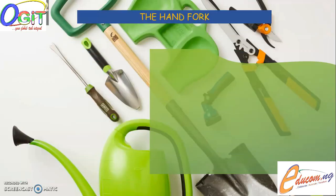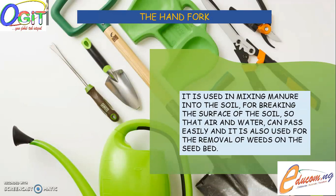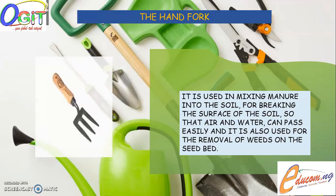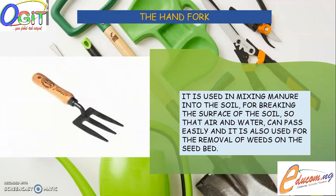The next type of farm tool is the hand fork. The hand fork is used for mixing manure into the soil, for breaking the surface of the soil so that air and water can pass easily, and also for the removal of weeds on the seedbed. When viewed, the hand fork looks like a kitchen fork. It is a little bit bigger, with a short wooden or metal handle and three, sometimes four, prongs.